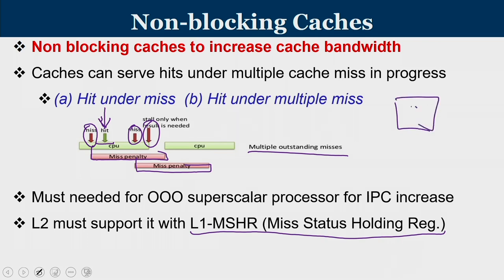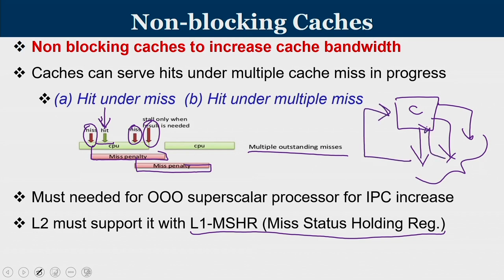When multiple misses are processed together from a cache, they are called outstanding misses, and miss data can return to the cache at different timings. This cache needs a log book recording each miss with its time and address. Whenever data returns to the cache controller, it needs to know whether it is the first miss A, second miss B, or third miss C. Such a log book is the L1 MSHR — miss status holding register — where for every miss an entry is recorded and removed when the miss returns.